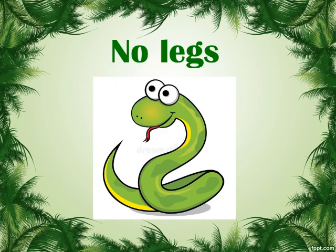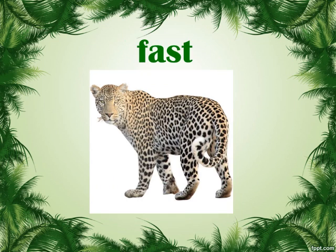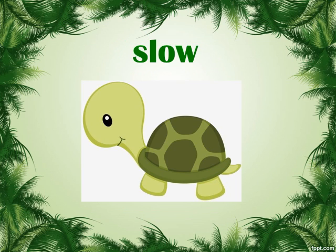Some animals have no legs, like a snake. Some animals run very fast, like a leopard. And some animals are very slow, like a turtle.